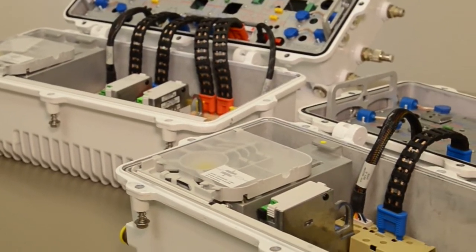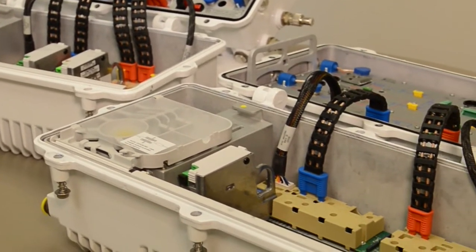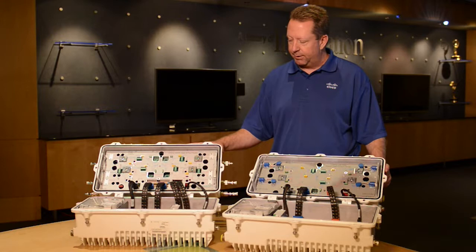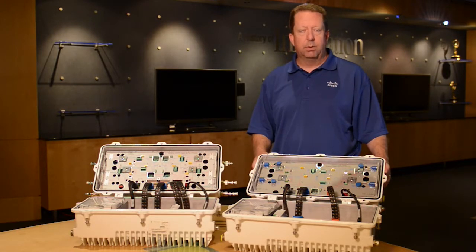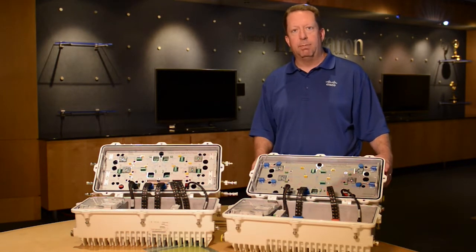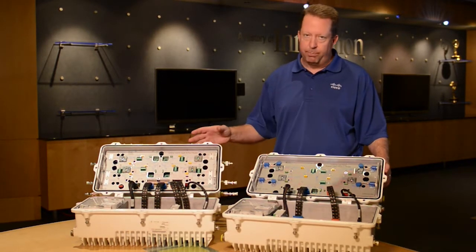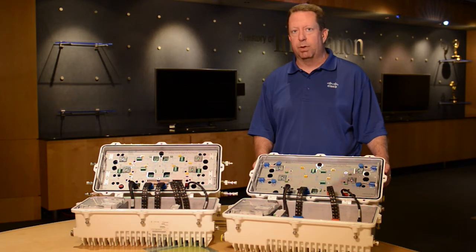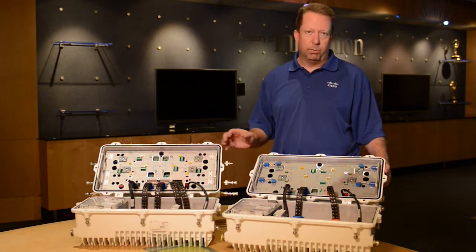I've got two different nodes here with me today. The new 1.2 GHz 4x4 segmentable GS7000 and the new 1.2 GHz fiber deep version of the GS7000. I'm going to spend most of my time on the fiber deep version, but the change of the diplex or split frequencies is virtually identical between the two different versions.